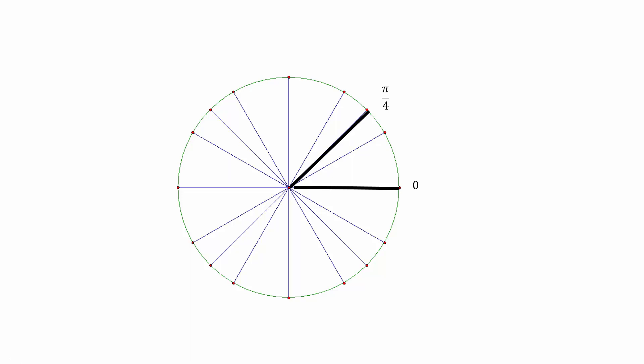Counting off another 45 degree segment or another pi over 4 segment, we get 2 pi over 4. Here we have 3 pi over 4, 4 pi over 4,